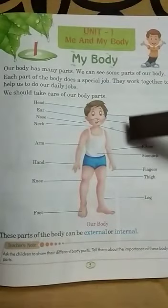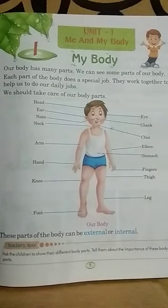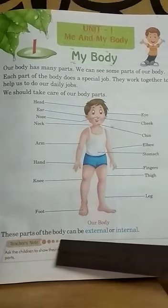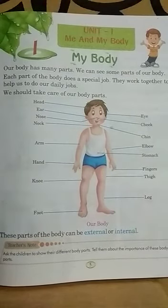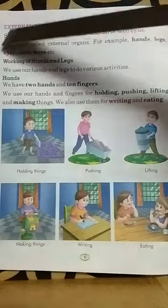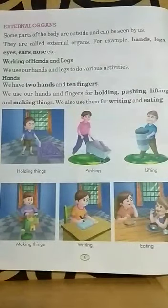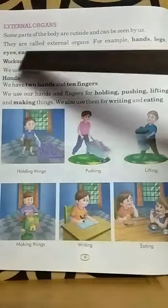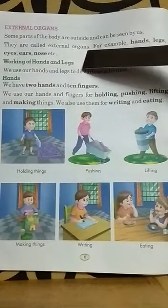These body parts can be classified into two different types. The parts of the body can be external or internal. Some parts of the body are outside and can be seen by us — these are called external organs.